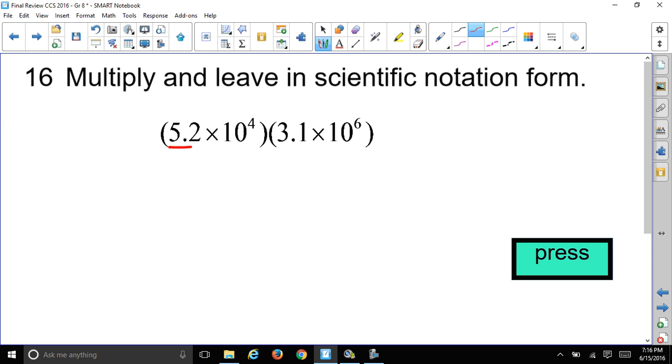We took the coefficients, which are the first numbers, and put them in parenthesis and multiplied those two together. Then we took the second term, which was the base, and multiplied those together by remembering that if the bases are the same, we're supposed to add the exponents. So we'll have 10 to the 4th power plus 10 to the 6th power exponent we're adding. That'll give us 10 to the 10th power. So far we know our answer is 10 to the 10th power.